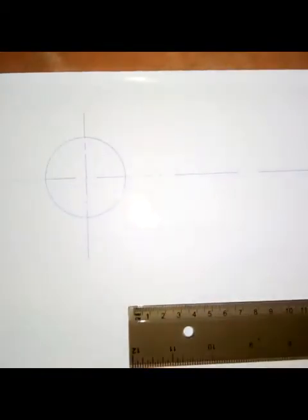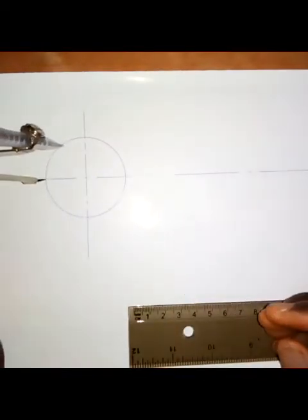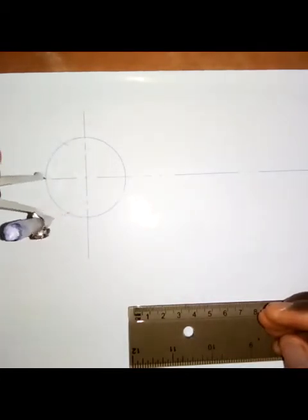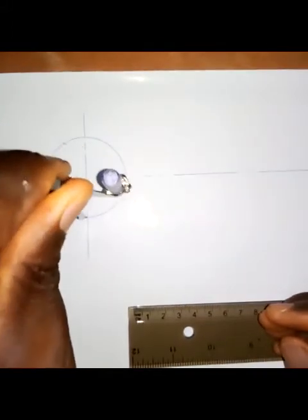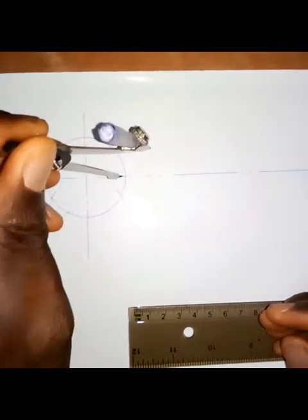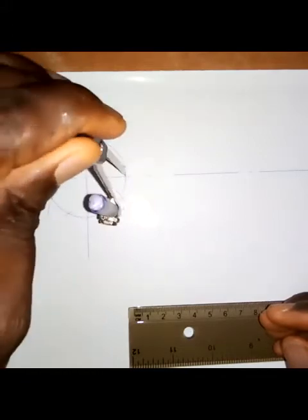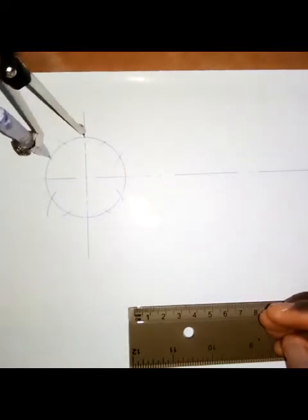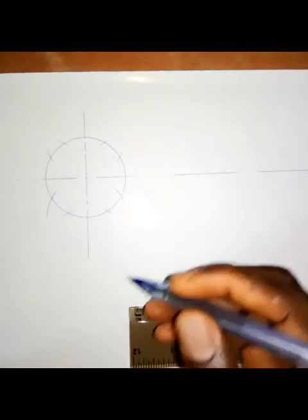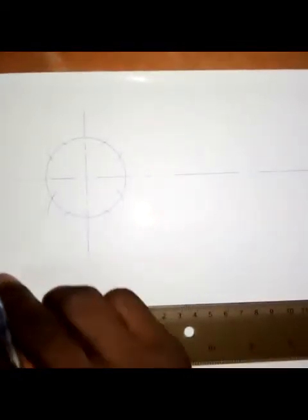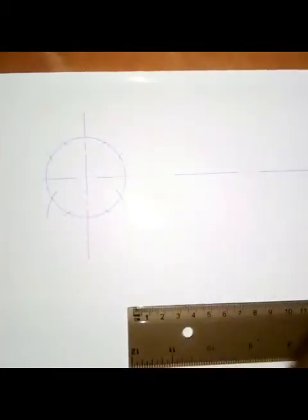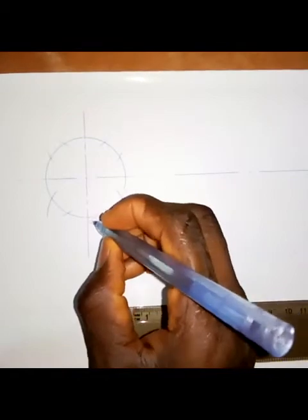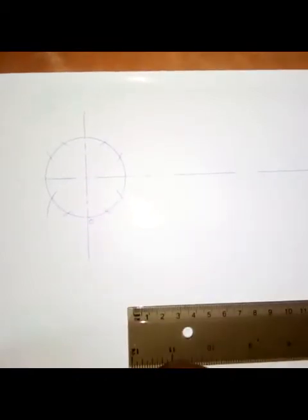After drawing this circle, divide the circle into 12 equal parts. Put the compass here and strike an arc on this circle, do the same, then bring it to put it here. We are going to number this in the clockwise direction because the circle is rolling on this side.